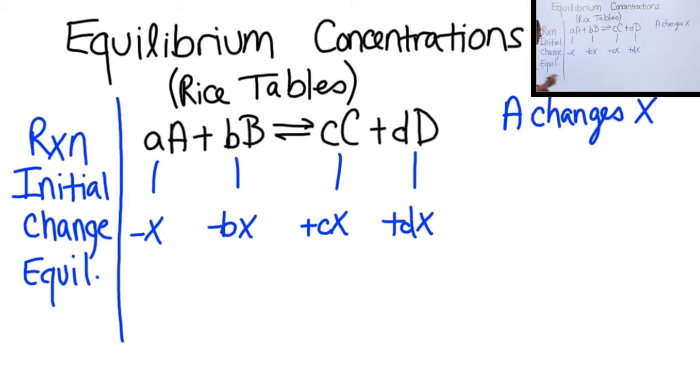So now when we go to equilibrium, we simply add these two rows. So we'll get one minus X, one minus bX, one plus cX, and one plus dX.